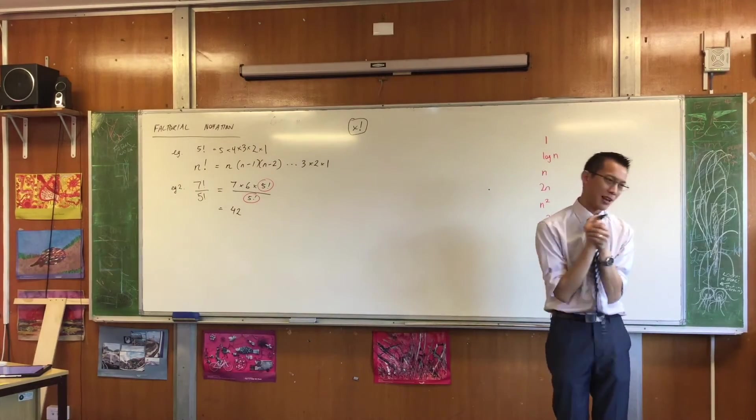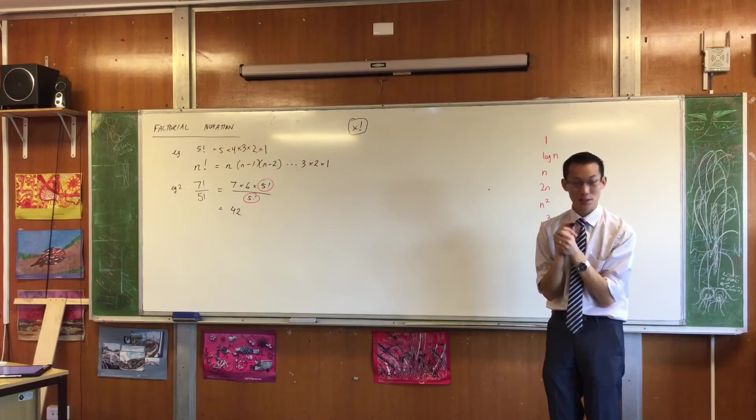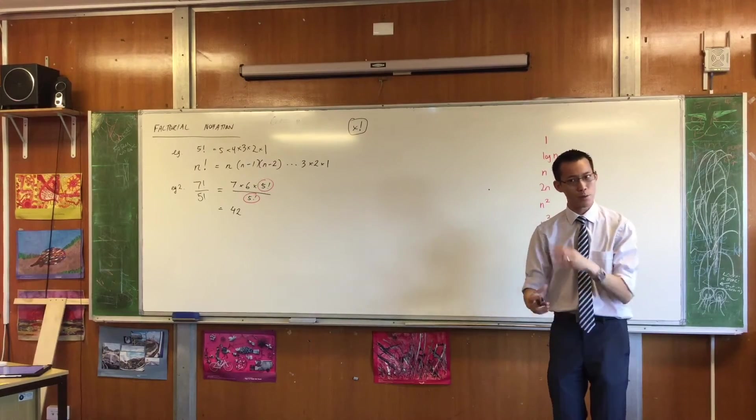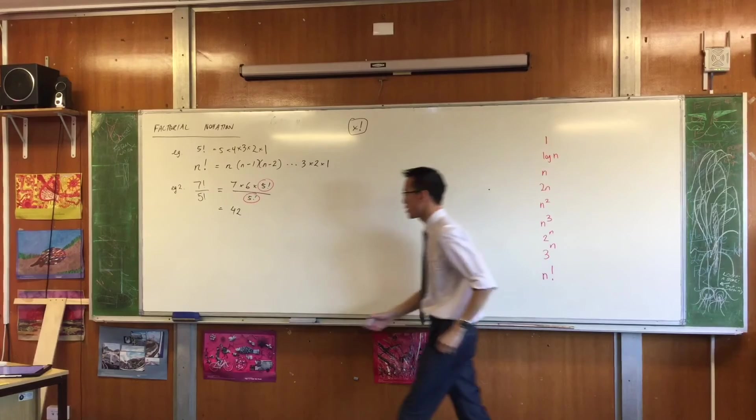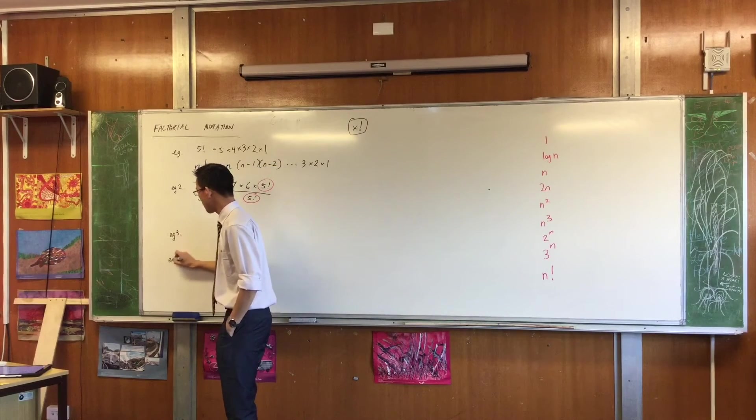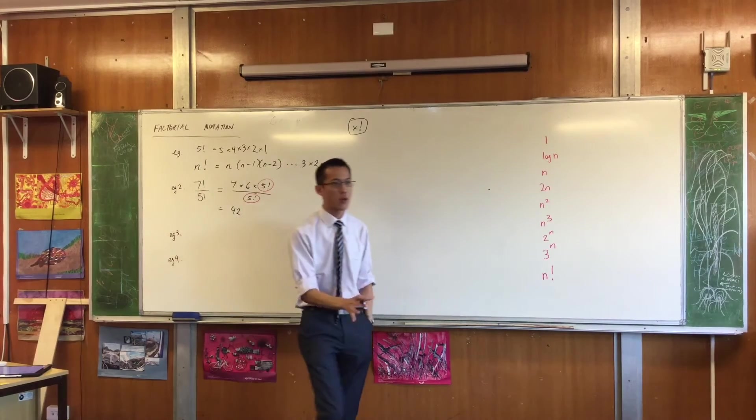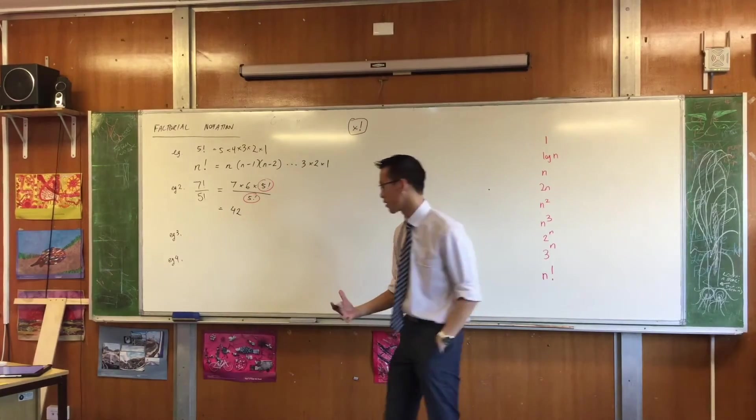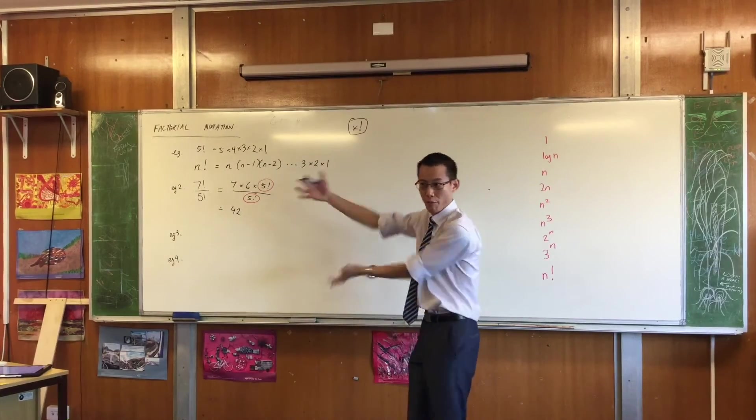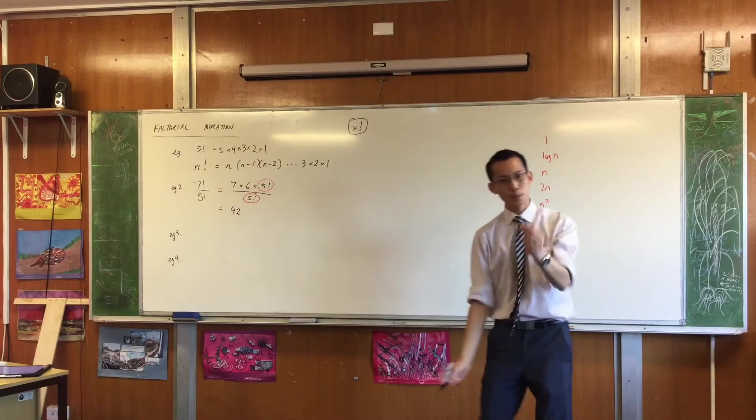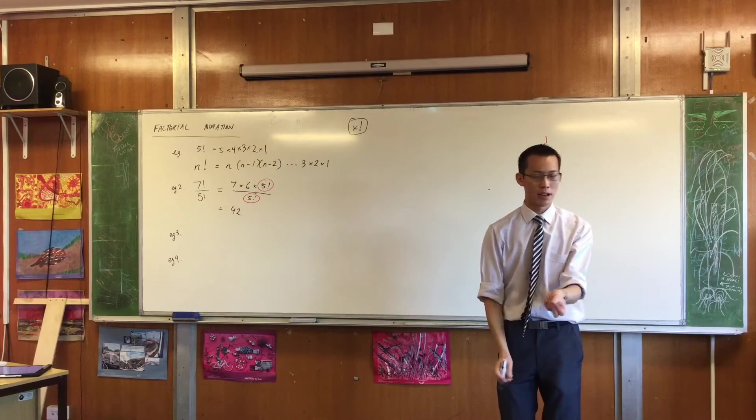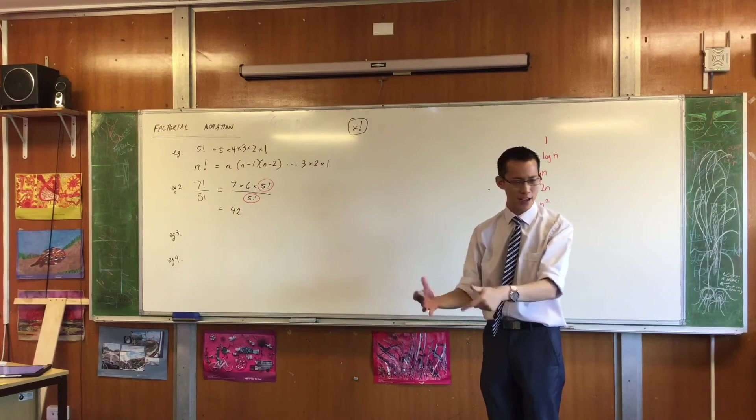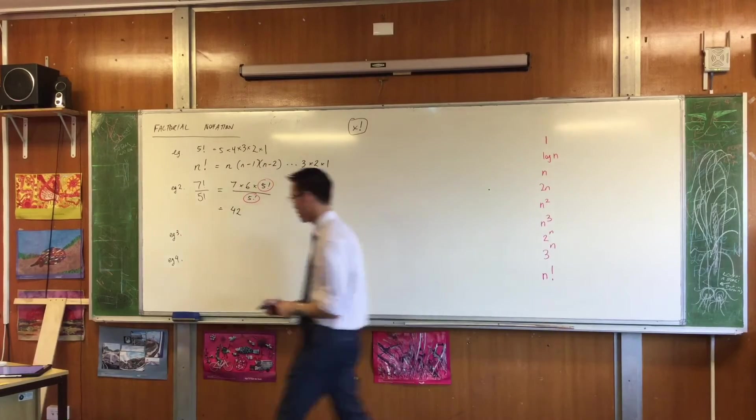Alright. However, sometimes you don't get nice, neat numbers. Sometimes you get algebra. And algebra, we know, is a little more abstract, harder to deal with. So I'm going to give you a couple of examples I'd love you to just tinker with on your own before I show you how they work. So what I'm going to ask you to do to each of the fractions I'm about to give you is, can you simplify them as far down as you can? Don't worry about expanding things out if they're factorized, leaving factorized. But how far can you simplify?